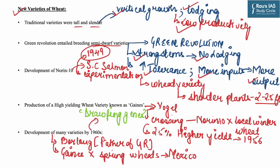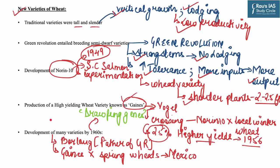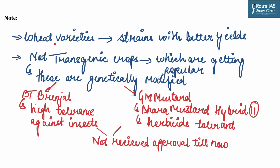In 1949, American biologist S.C. Solomon identified a wheat variety developed at an experimental station showing shorter plants that grew only 2 to 2.5 feet. This variety was called Norin 10. Norin 10 was later crossed with local winter wheat in the United States, showing 25% higher yields in 1956 — known as Gaines. The Gaines variety was shared with Norman Borlaug, father of the Green Revolution. He crossed it with spring wheats of Mexico, and by the 1960s, many varieties incorporating Norin 10 dwarfing genes were released. These are strains with better yields, not transgenic crops.